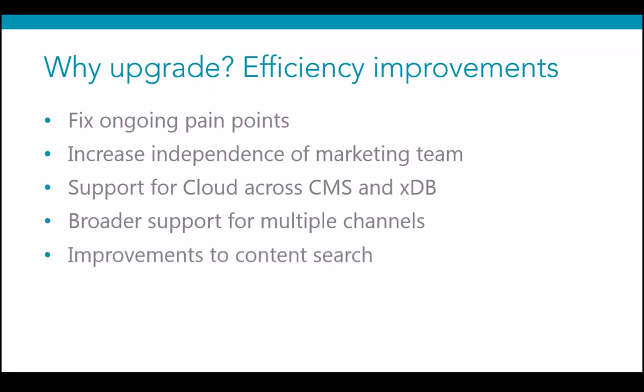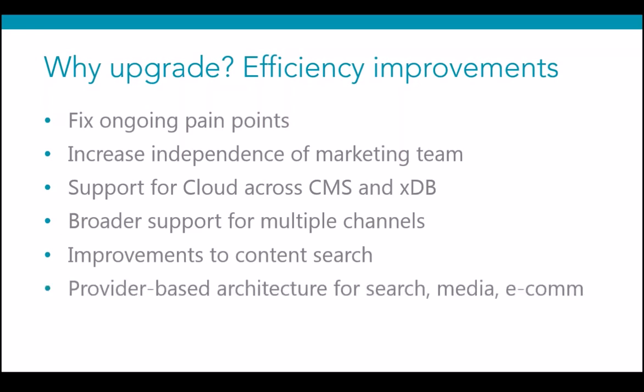Content search improvements were a big one in version 7 — they revamped the whole search API and improved searching within the content author environment. There's also a provider-based architecture trend, meaning if you're using other platforms for search, media, video management, or e-commerce, you can swap out the native solution. For example, Sitecore ships with a Lucene search provider natively, but you can swap it out entirely with the Coveo module.